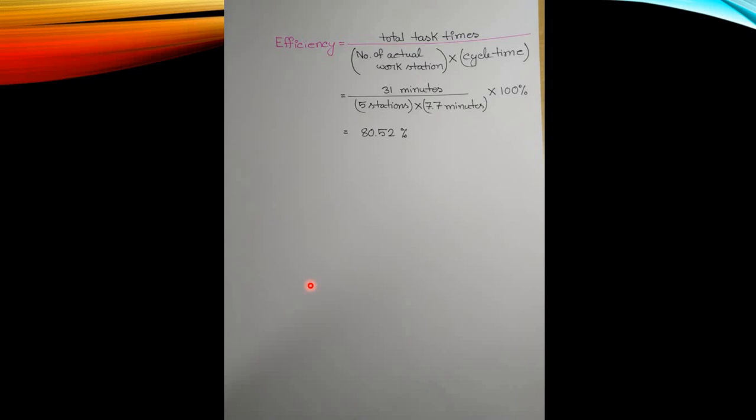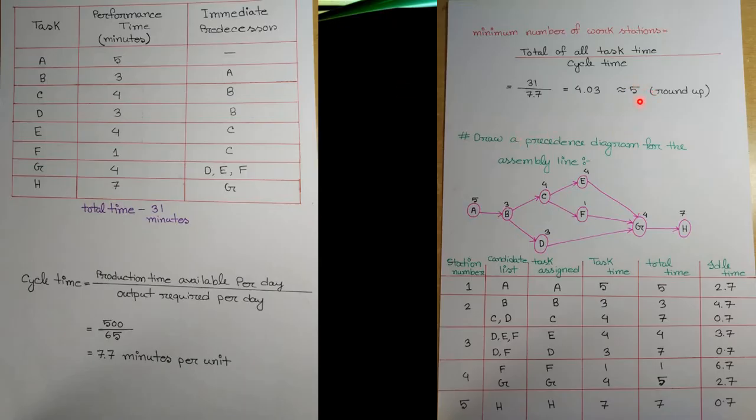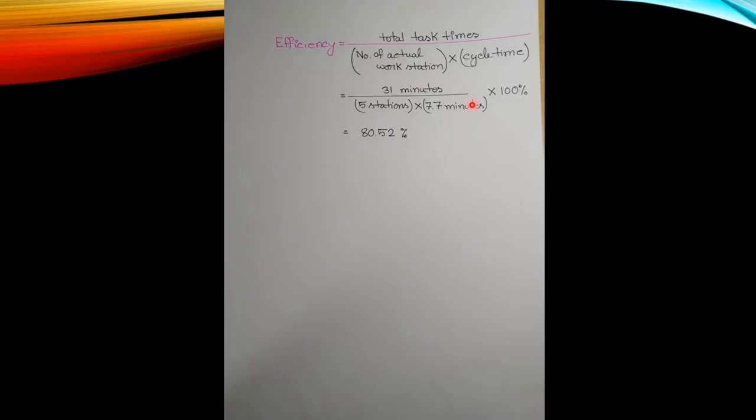Efficiency is calculated as total task time divided by the number of workstations times cycle time. That's 31 divided by 5 times 7.7, which equals 80.52 percent. This is the efficiency of our line balancing.